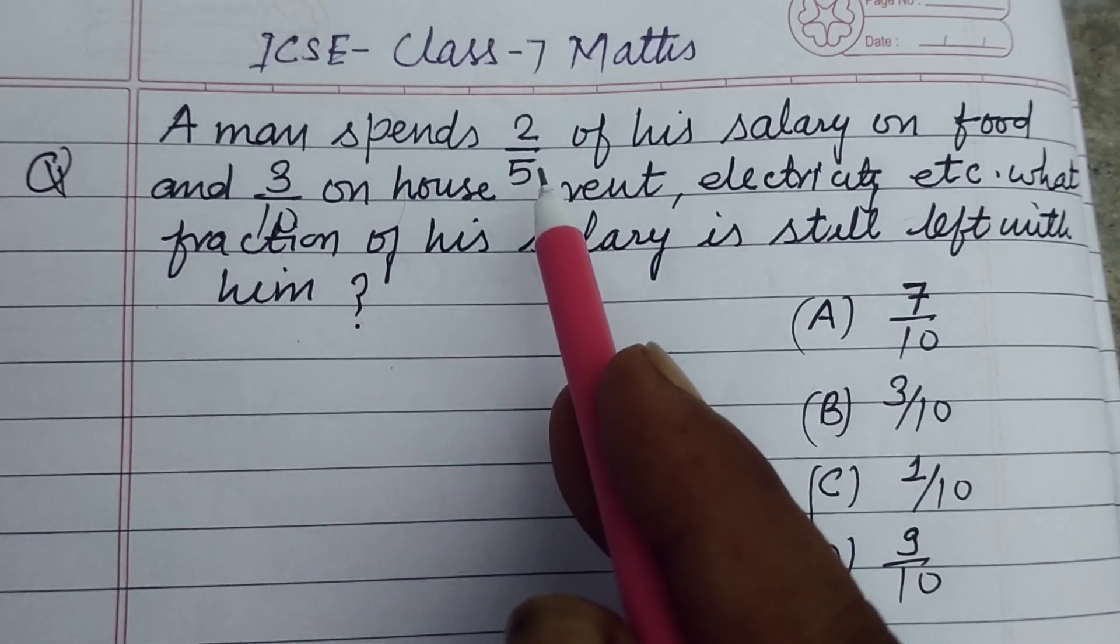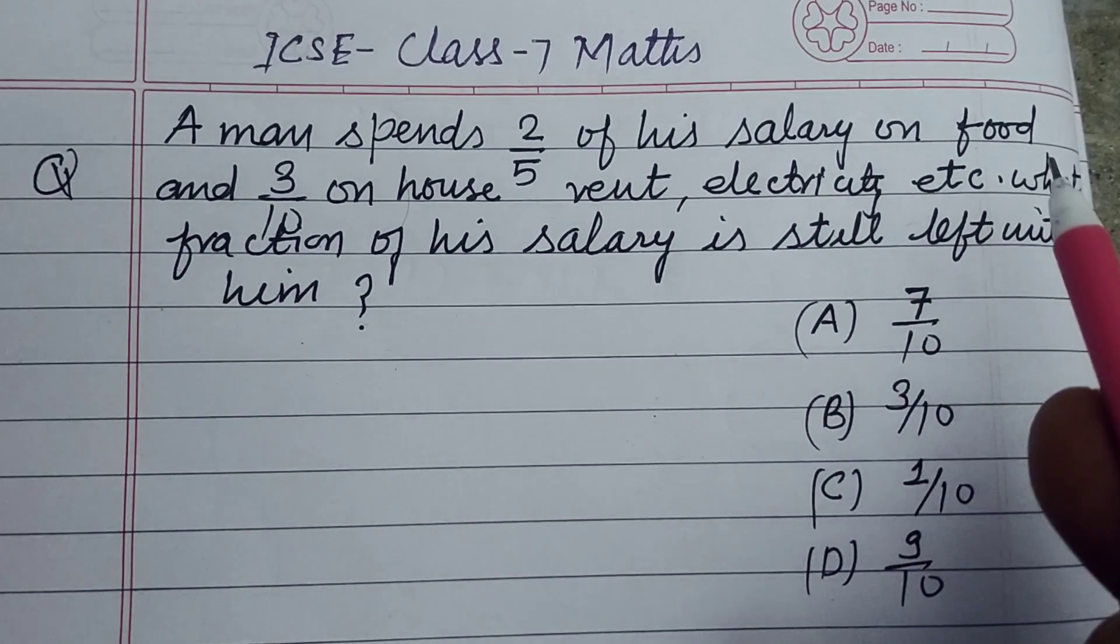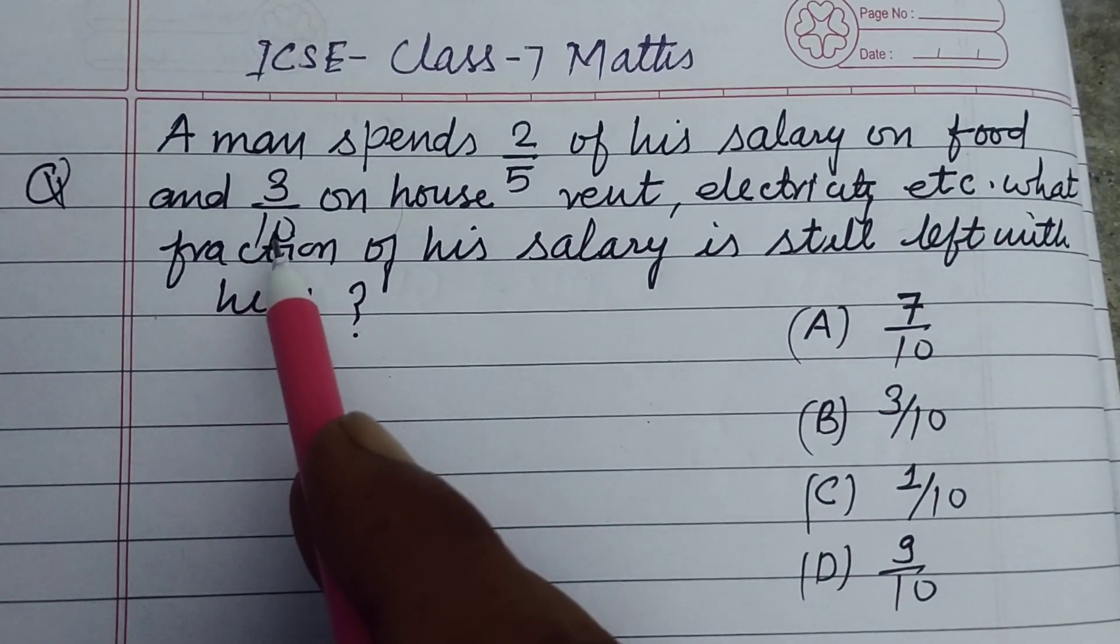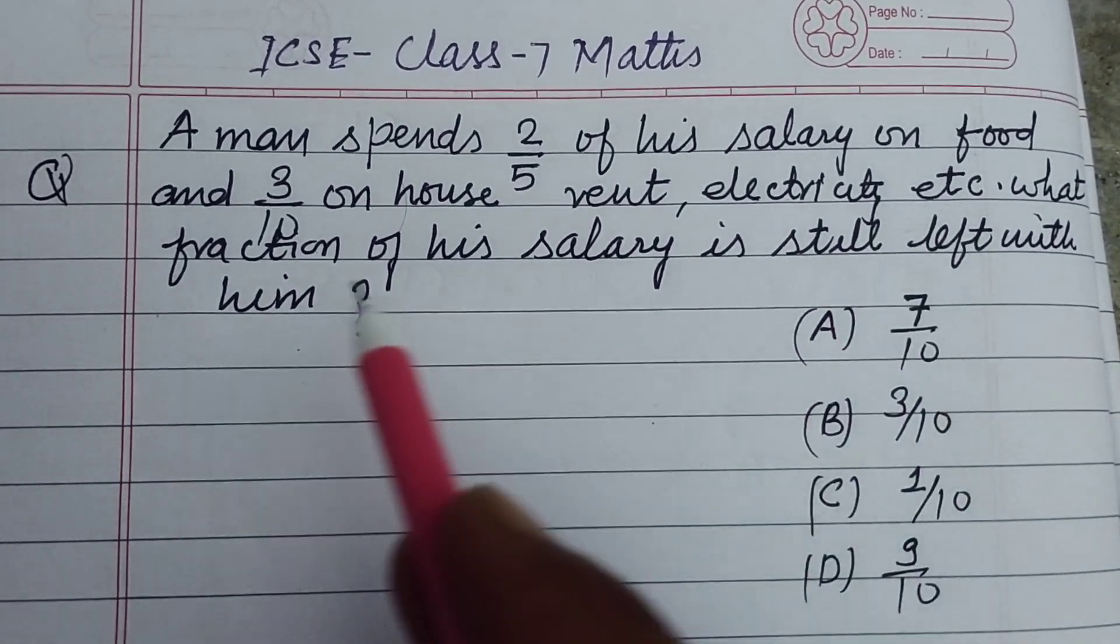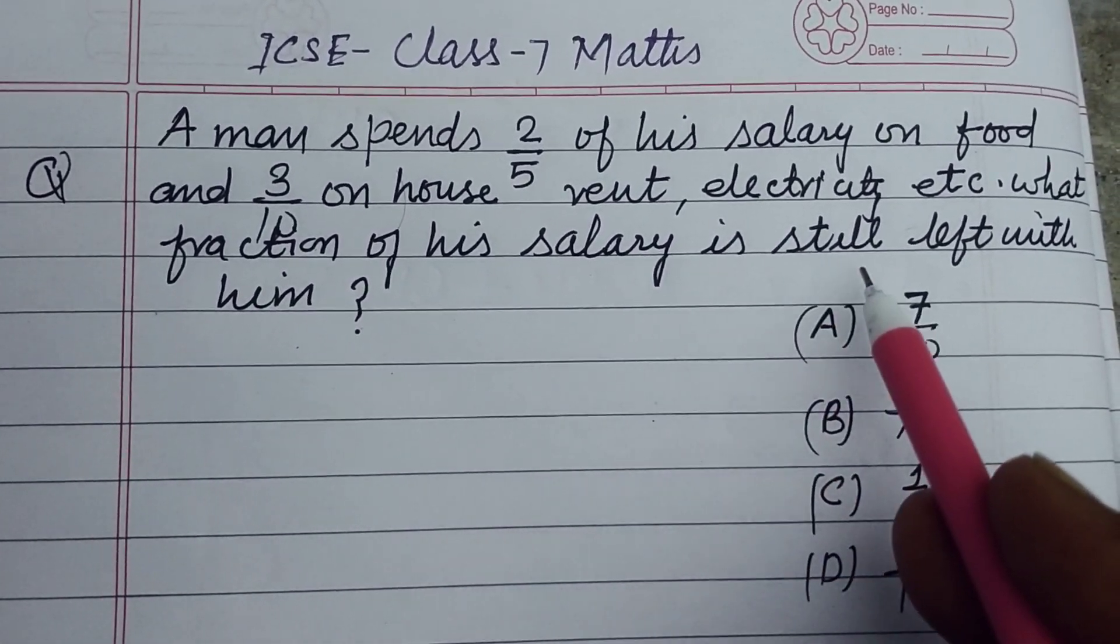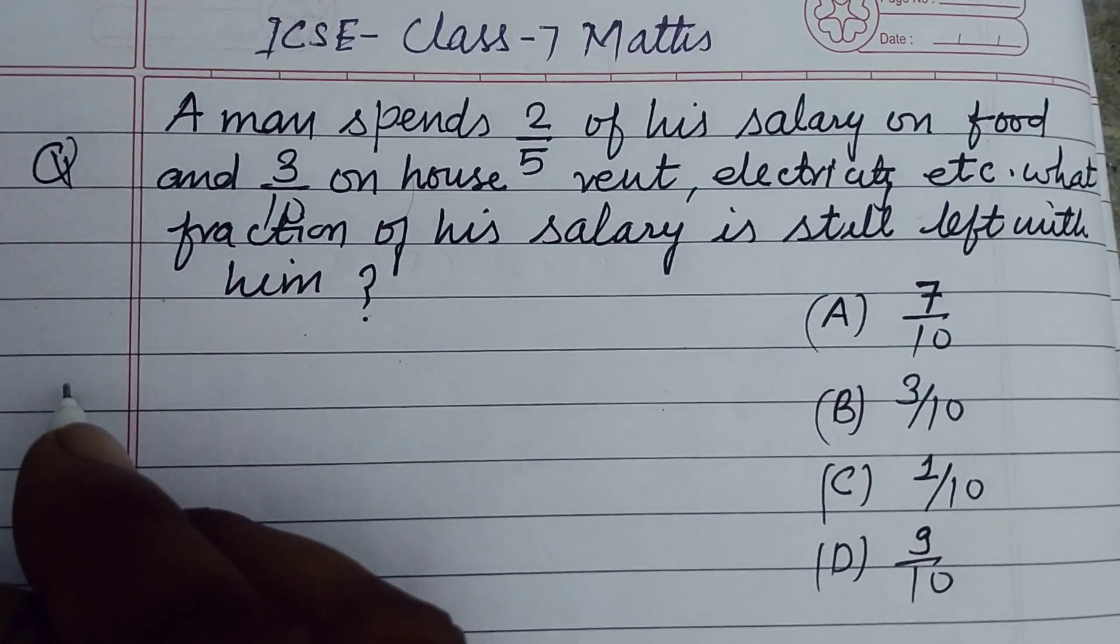A man spent 2 by 5 of his salary on food and 3 by 10 on his house rent, electricity, etc. What fraction of his salary is still left with him?